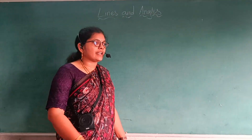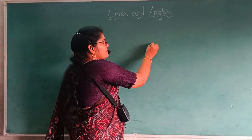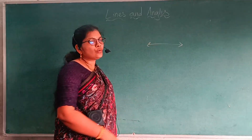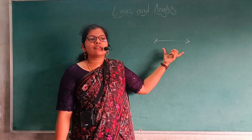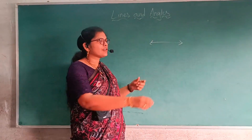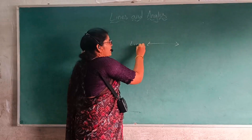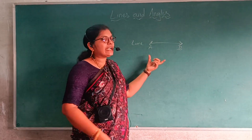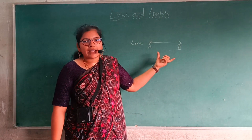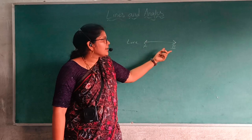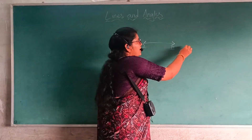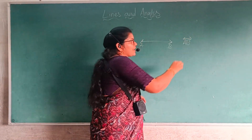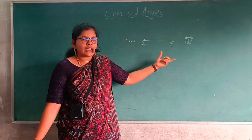First of all, what is a line? A line is a line which has two arrows. We can denote this line as AB and name it as line AB.